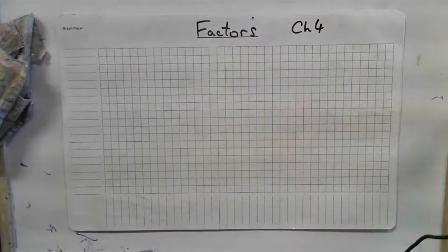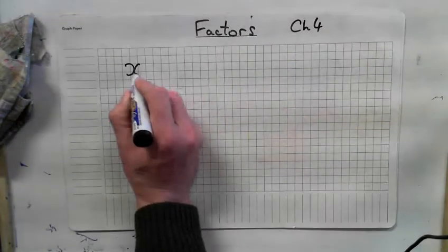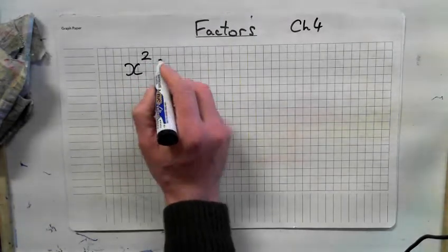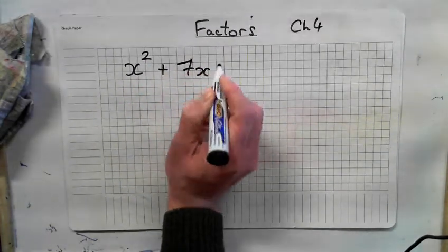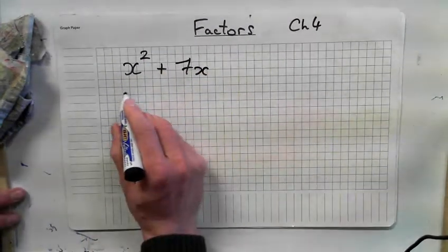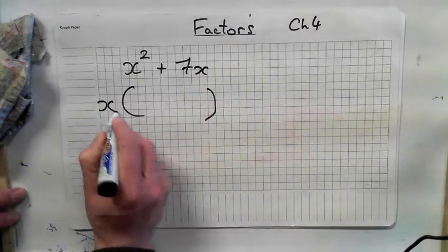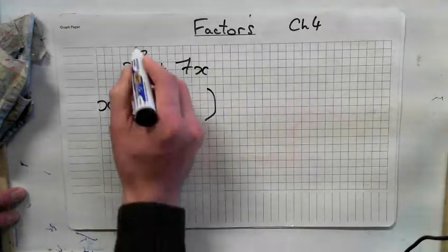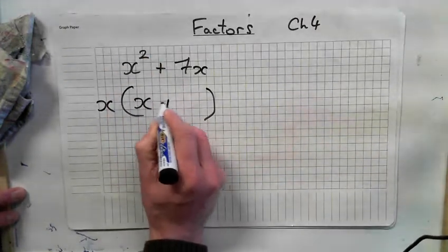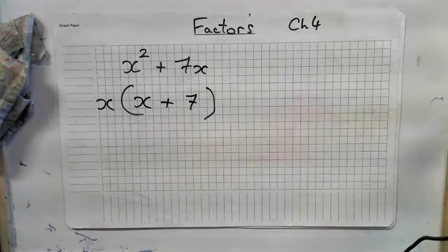Factors. So the first type of question we did was x squared plus 7x. What are the factors? What's common to both? X. Look up. X times what is x squared? X. Times what? X plus 7. Right. That was the first type of factors that we did.